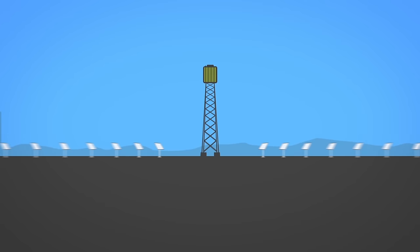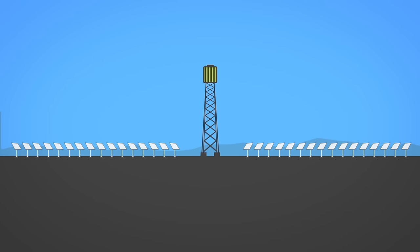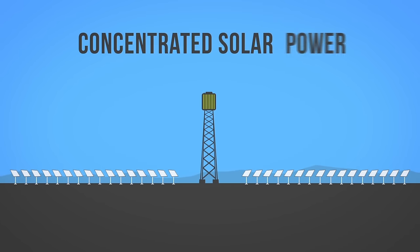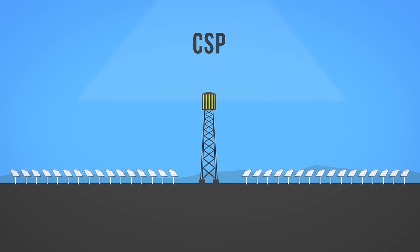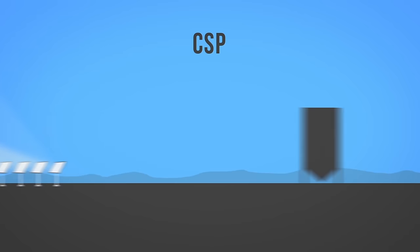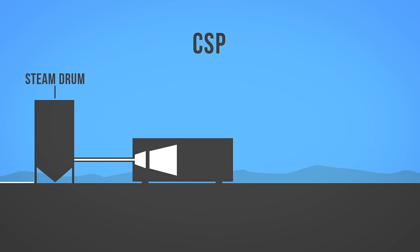For electricity production, high temperature solar thermal systems called concentrated solar power or CSP use groups of mirrors to concentrate solar energy on a central collector. This produces temperatures high enough to generate steam which then turns a turbine, driving a generator to produce electricity.